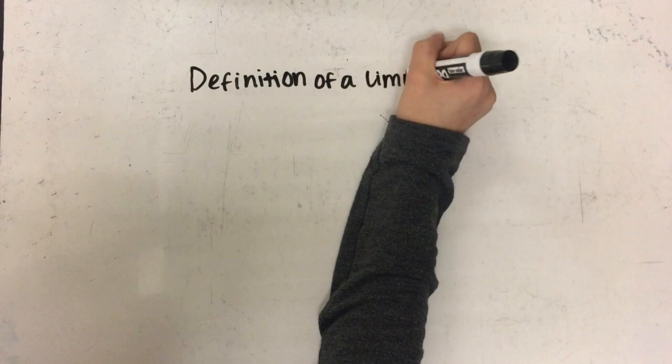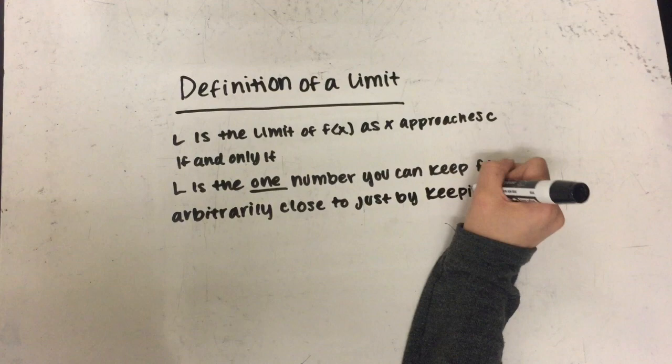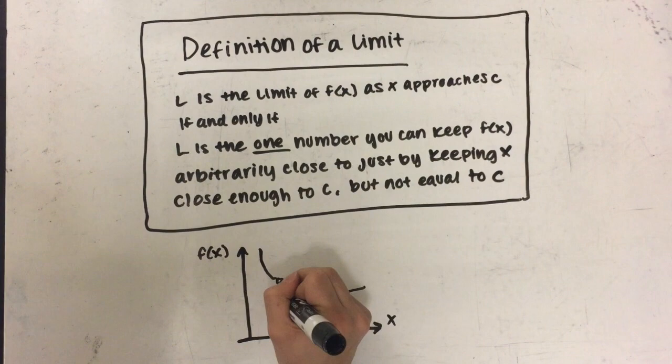The definition of a limit is that L is the limit of f as x approaches c if and only if L is the one number you can keep f arbitrarily close to just by keeping x close enough to c but not equal to c. As you can see on the graph, the graph is approaching the same value of f from both the left and the right as x is approaching c but never being equal to c. This value is the limit.